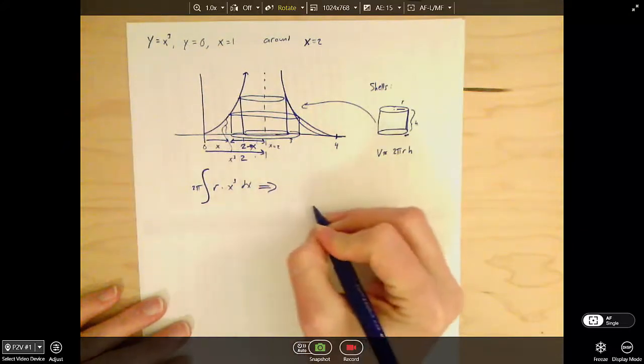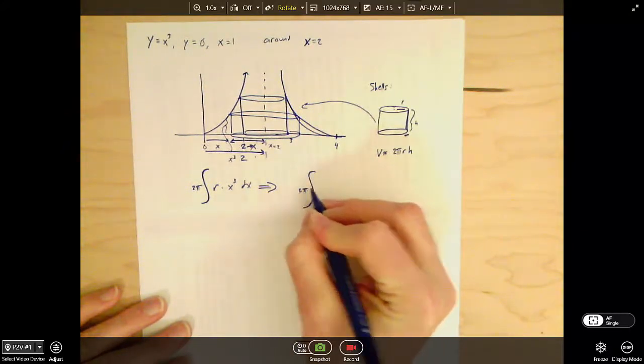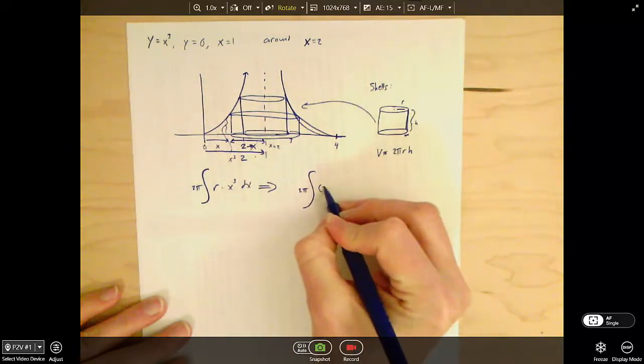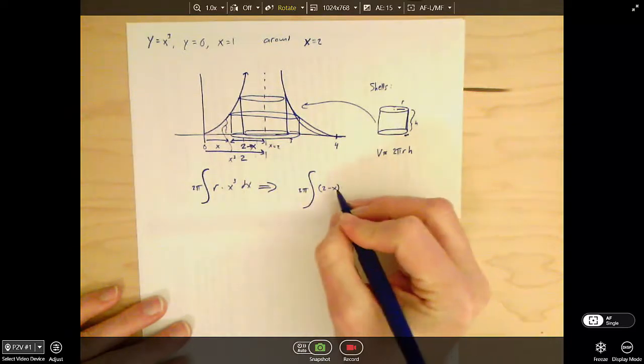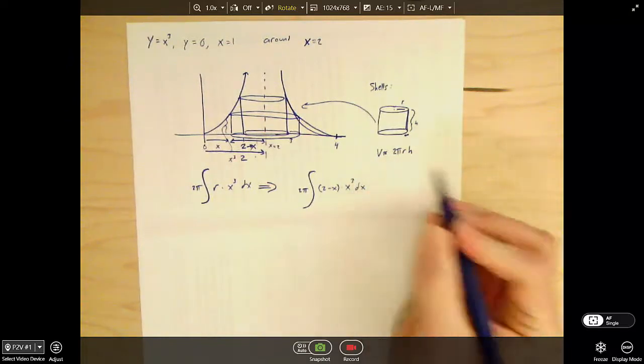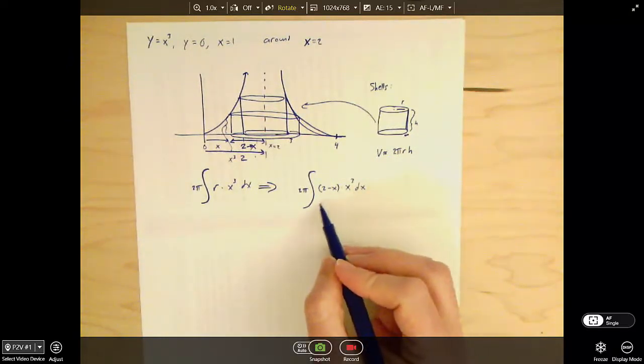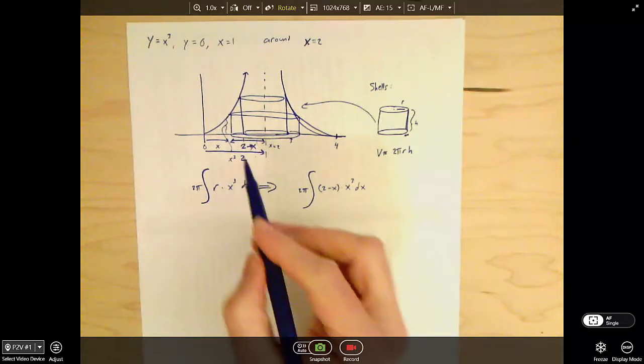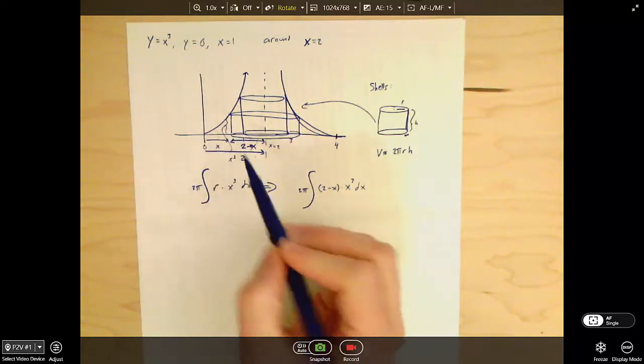So that's what my integral is going to be. It's going to be 2 pi times the radius, which is 2 minus x, times the height, which is x cubed dx. I'm not quite done yet, because I need the bounds of integration. I need to know where are my shells starting and where are they ending.